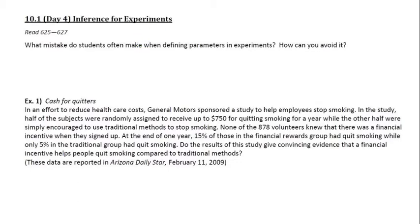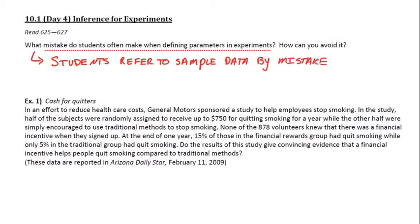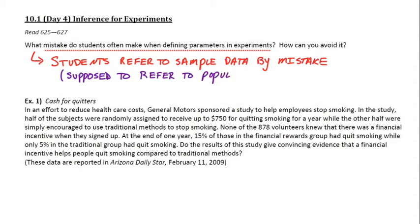Inference for experiments applies both to confidence intervals and significance tests. The first part here addresses what mistake students often make when defining parameters in experiments and how to avoid it. Students, without even knowing it, refer to the sample data by mistake. We know we're supposed to refer to the population — population parameters refer to the population.